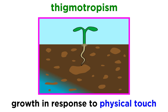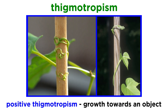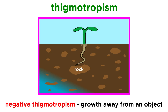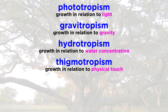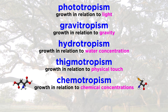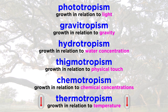When parts of a plant encounter a solid object, they demonstrate thigmotropism, or growth in response to physical touch. Positive thigmotropism can be seen when a climbing vine wraps itself around a solid object as it grows. Negative thigmotropism is exhibited by roots growing away from or around rocks in the soil. We are probably getting the basic idea of how tropisms work.